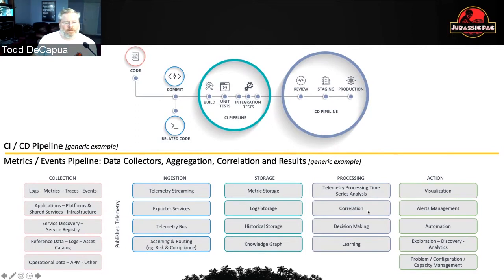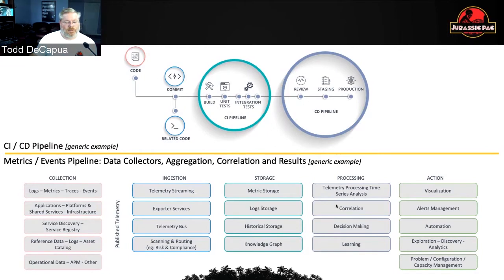As we keep moving through to processing — this is where we're starting to get into aggregation and correlation. We've got telemetry processing, time series analysis running in parallel to correlation of the data — APM results, RUM data — how does that correlate into the variety of infrastructure we have, and how does that work with all the traces? You can start to see why these processing pieces are critical.